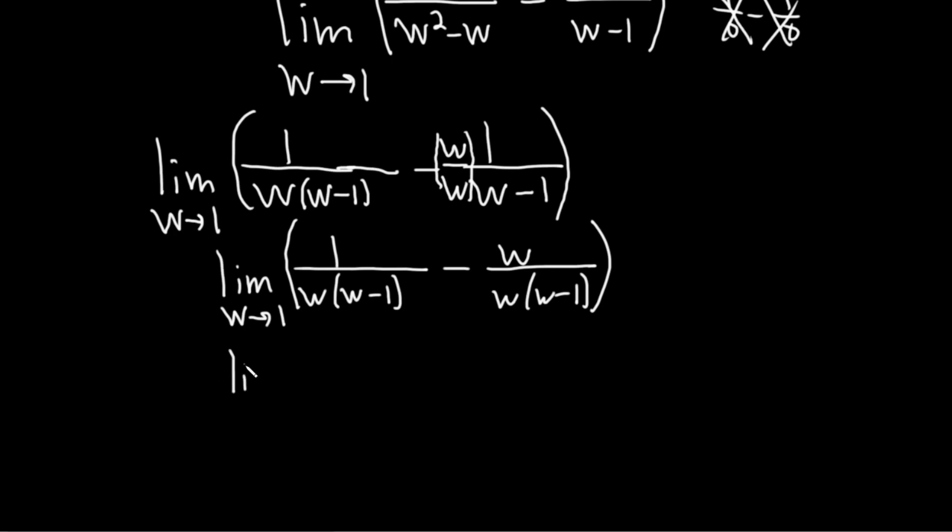So this is the limit as w approaches 1. And now we can subtract because the denominators are the same, right? This is the same as this. We can perform the subtraction. So we just subtract the numerators: 1 minus w, and it's all over w, parentheses, w minus 1.